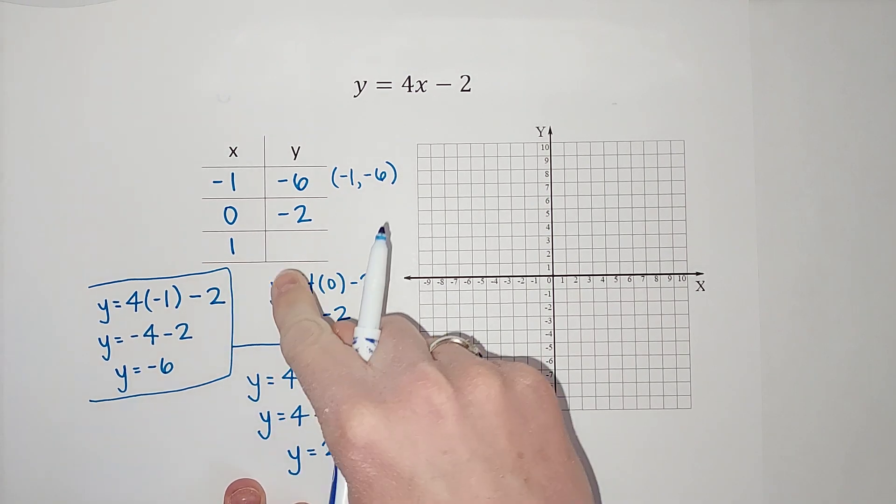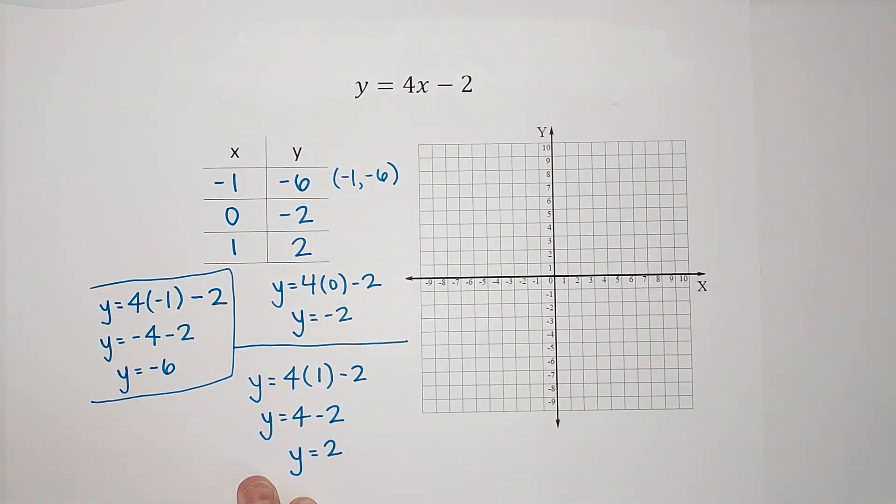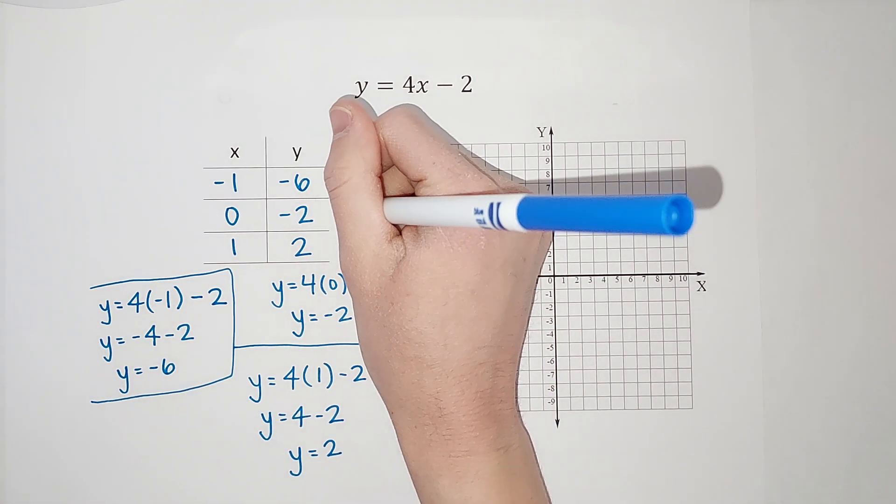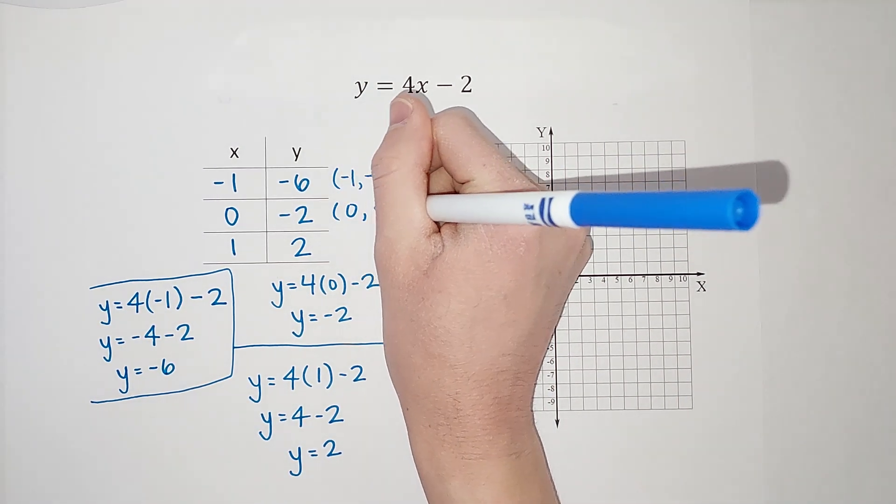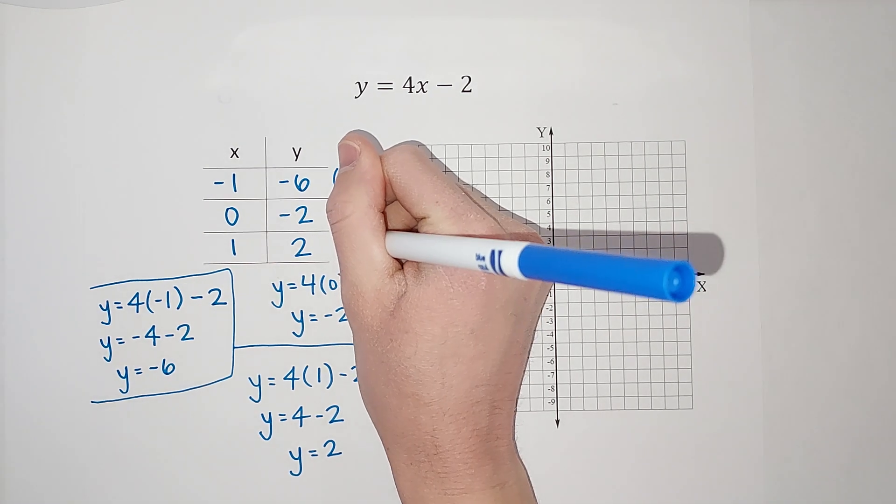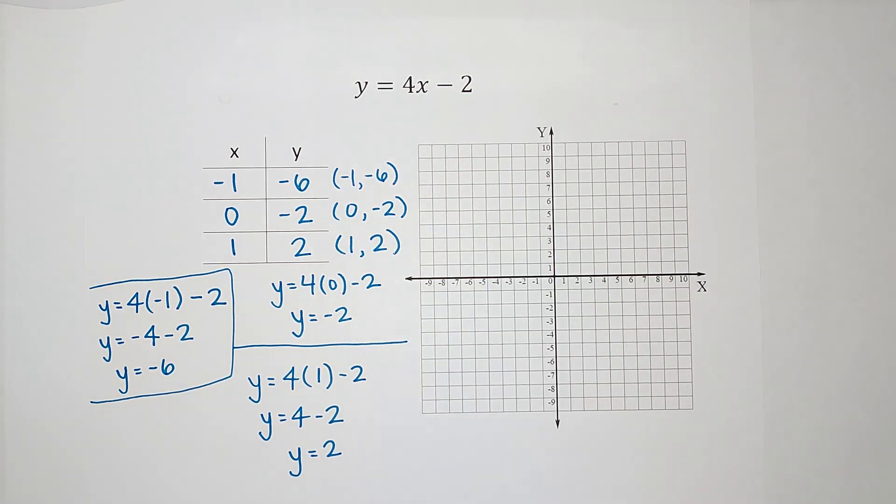So when x is 1, y is 2. There's my points. Again, I could write these as ordered pairs if that's helpful for you. And then we are going to graph these.